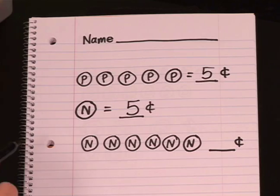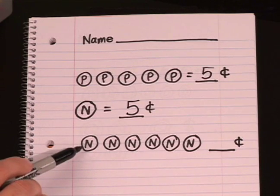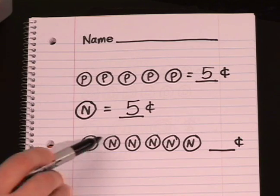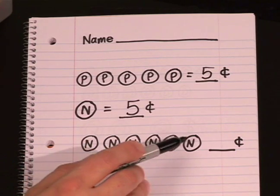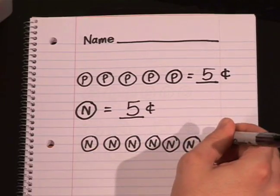and they count the nickels the way they learned to count with the skip counting: five, ten, fifteen, twenty, twenty-five, thirty, and then they write it in there.